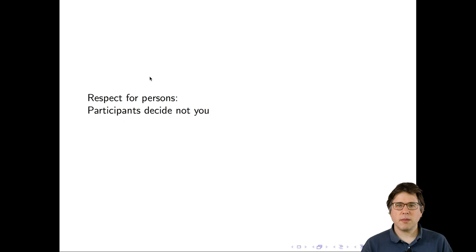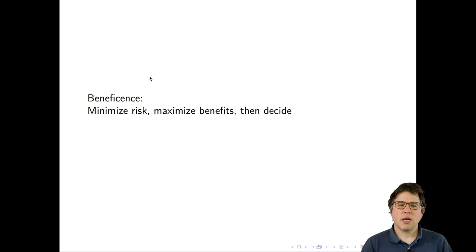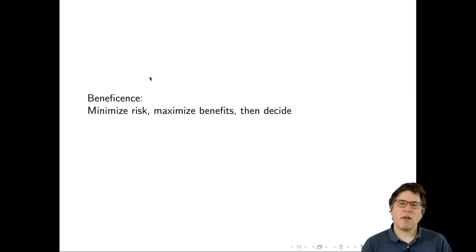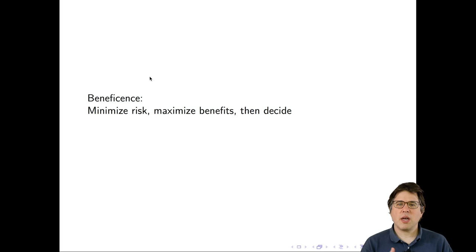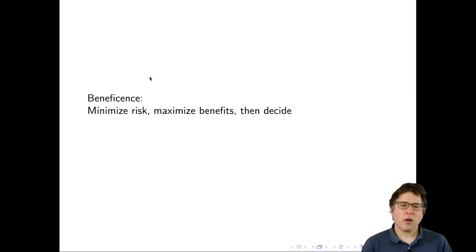The second principle is beneficence, which is about minimizing the risks of studies, maximizing the benefits, and then deciding whether the study should go forward. Have you done everything you can to minimize risks to your participants? Have you done everything you can to maximize the benefits? These two things often require technical expertise, and researchers are often in the best position to know about them. For a given study, are there small changes you can make that would alter the balance? Once you've done that technical work, there's a second step: deciding whether the study should still go forward.